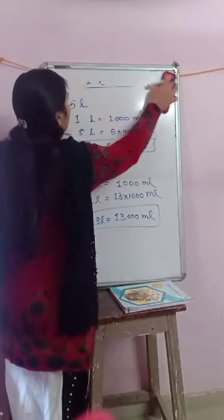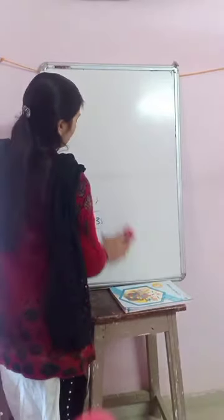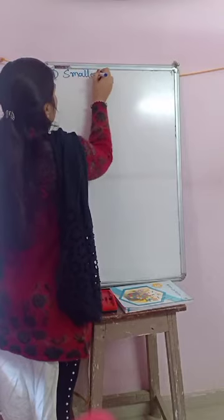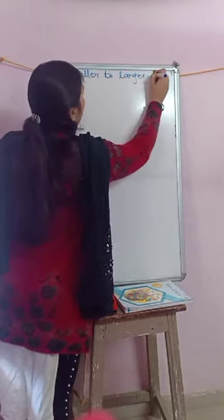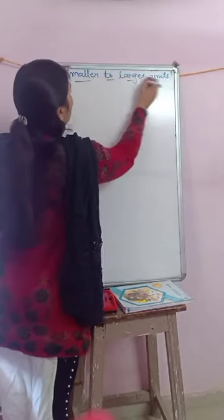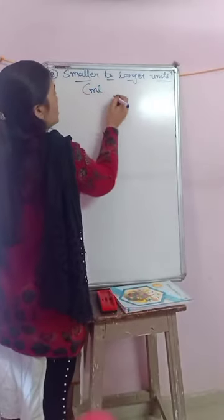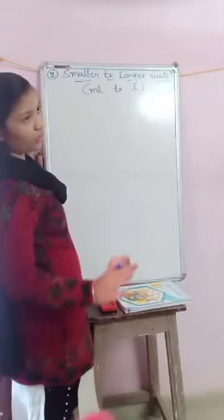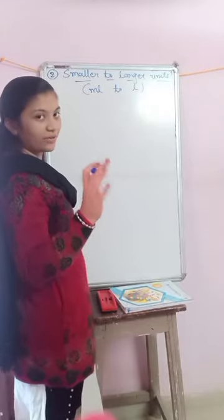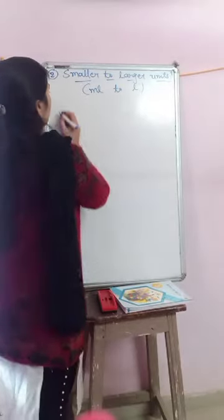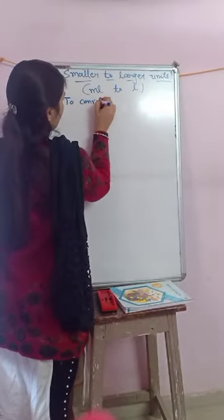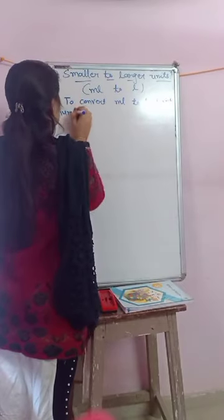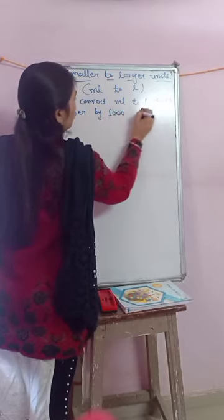Now it's time for the second conversion: smaller to larger units. Smaller to larger means we have only one smaller unit for capacity, that is milliliter to liter. Same thing you have to follow as when converting gram to kilogram — you divide by one thousand. To convert milliliter to liter, divide the number by one thousand.